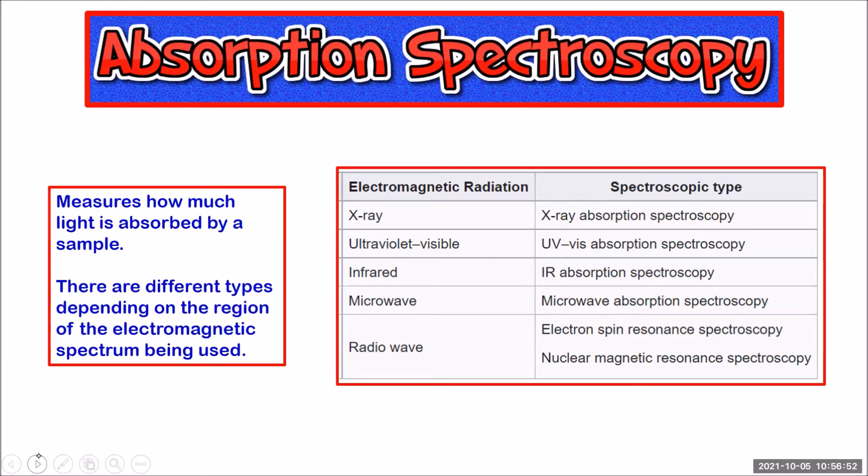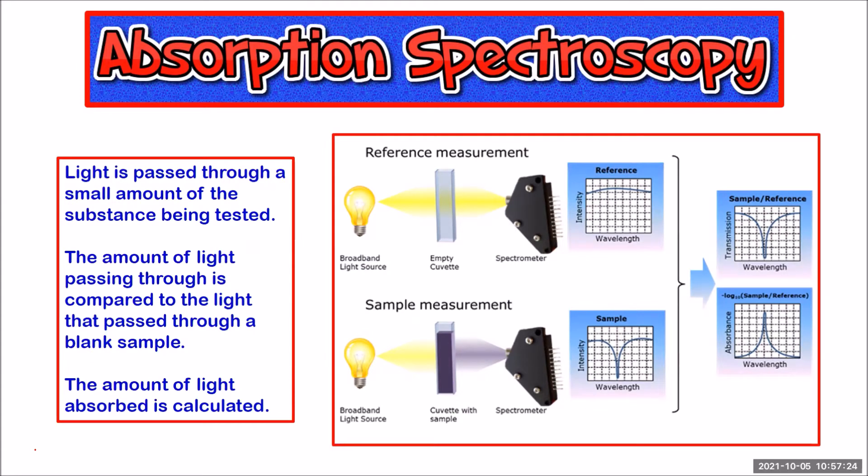Absorption spectroscopy analyzes the concentration of a substance by measuring how much light the sample can absorb. There's different types. They're named depending on the region of the electromagnetic spectrum that's being used in the analysis. The way it works is by passing light around a small amount of the substance being tested. This substance is normally placed in a little vessel called a cuvette. Light is shone at the sample and a detector measures the amount of light that's produced on the other side of the sample.